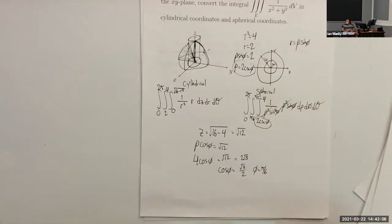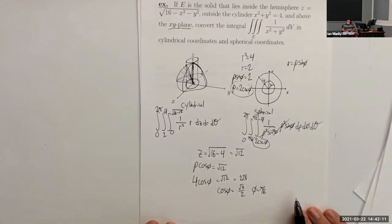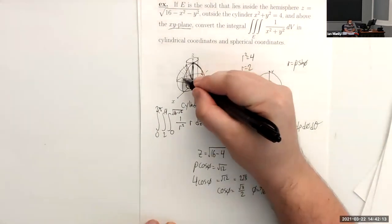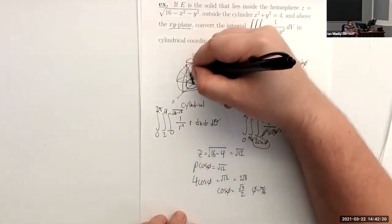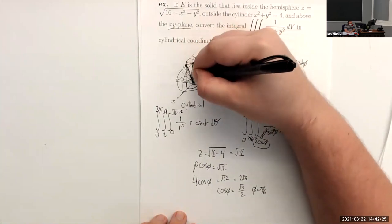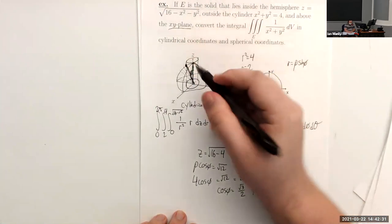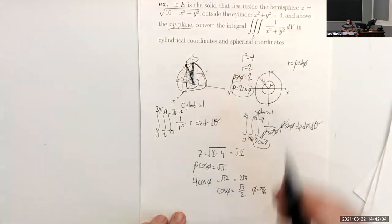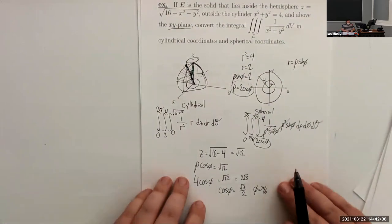This example illustrates why spherical coordinates are messier for non-spherical shapes — the cylinder gives the awkward lower bound ρ = 2csc(φ). The upper bound for φ is π/2 because the xy-plane is our lower boundary. The lower bound φ = π/6 is where the cylinder meets the sphere. In general, use spherical coordinates when you have actual spheres; otherwise cylindrical tends to be cleaner.